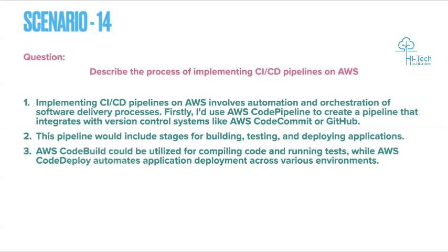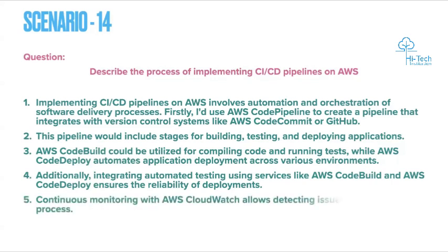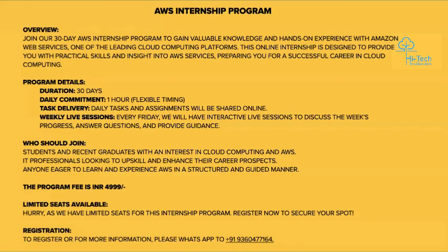AWS CodeBuild can be used for compiling code and running unit tests, while AWS CodeDeploy automates deployment across various environments. Integrating automated testing using CodeBuild and using CodeDeploy for deployment ensures reliability across environments. Continuous monitoring with AWS CloudWatch allows you to detect issues earlier in the delivery process and address them quickly.